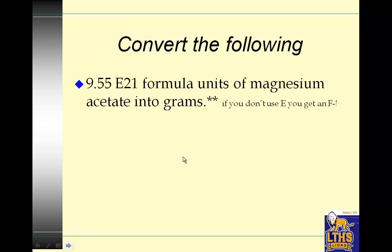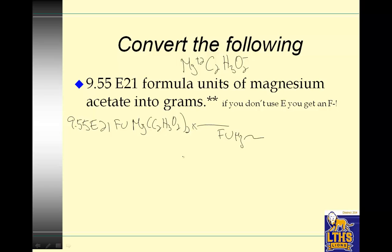Convert the following: 9.55E21 formula units of magnesium acetate into grams. Oh, magnesium acetate. Magnesium is plus 2. Acetate is C2H3O2 negative 1. So that means when I do 9.55E21 formula units of Mg(C2H3O2)2 into grams. I hate you formula units, Mg blah blah blah. And I'm going to go into moles of Mg acetate. 1 goes with moles and formula units 6.02E23.